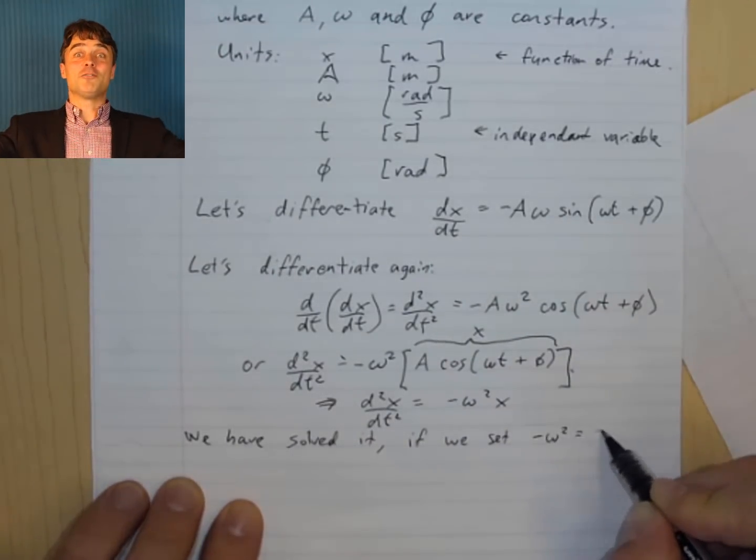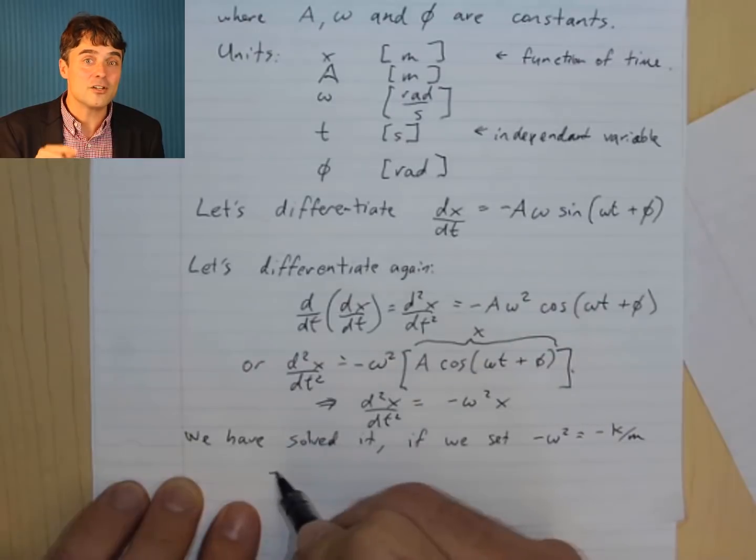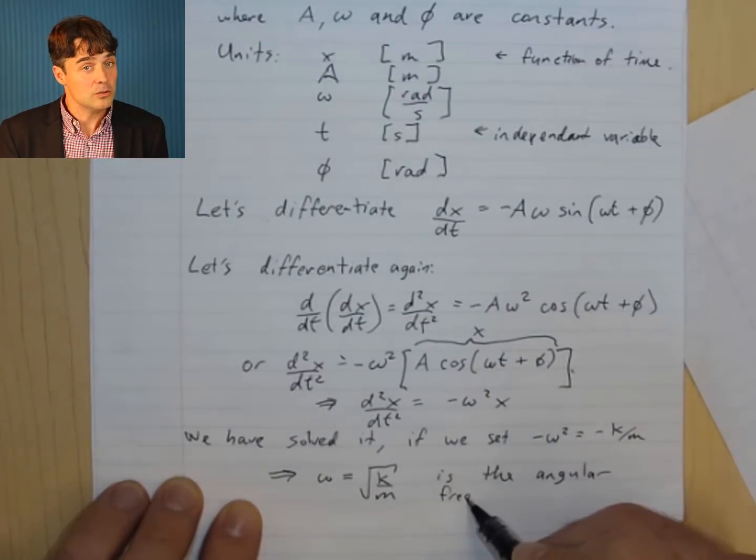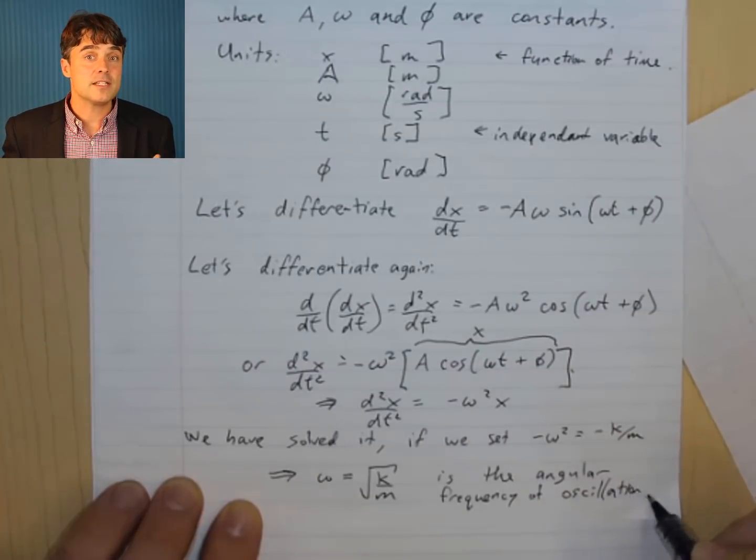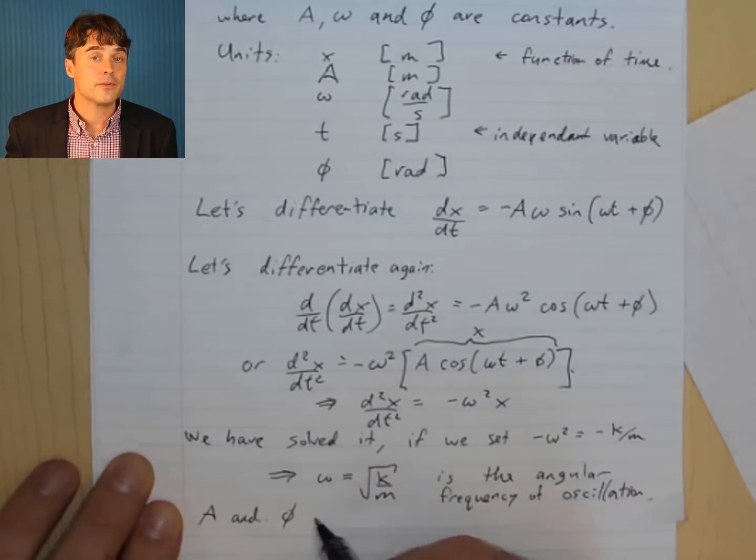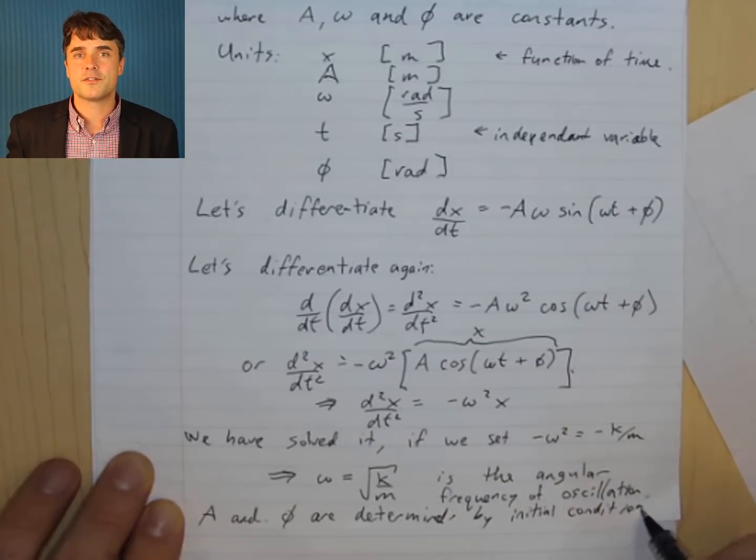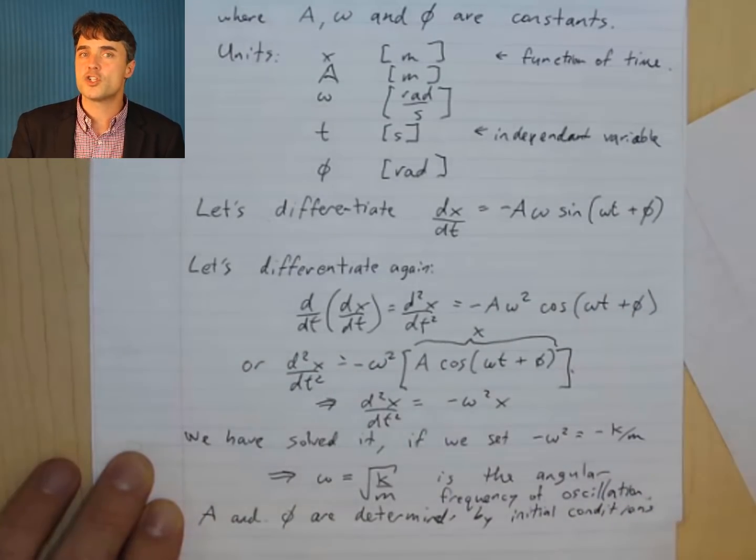So, we've solved it! If we set the constant omega squared to be k over m. So, the square root of k over m is the angular frequency of the oscillation. As for A and phi, these are arbitrary constants that are set by the initial position and velocity of the oscillation.